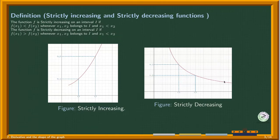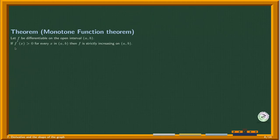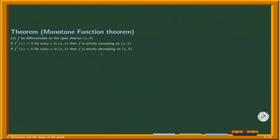By looking at the derivative we can identify the points where the function is increasing and where it is decreasing. The Monotone Function Theorem helps us here: let f be differentiable on an open interval (a, b). If the derivative is positive for every point x in (a, b), then f is strictly increasing. If the derivative is negative for every point in (a, b), then f is strictly decreasing.